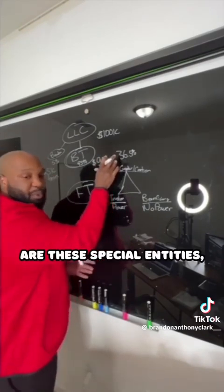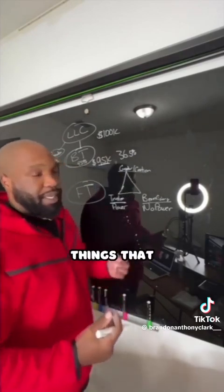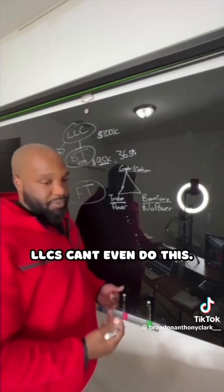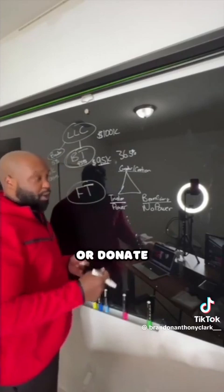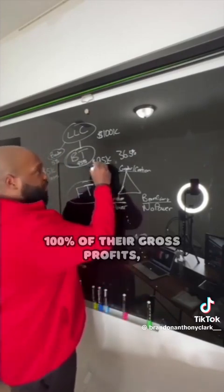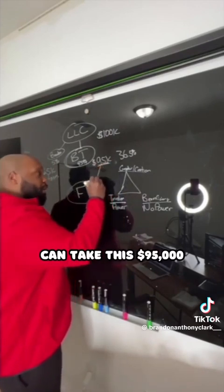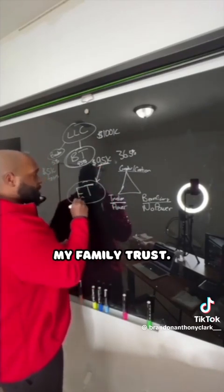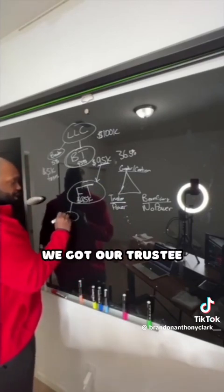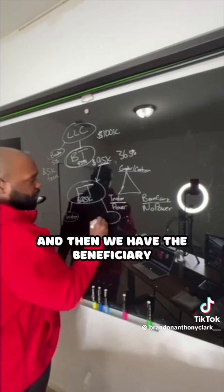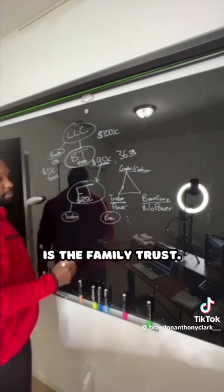But because trusts are these special entities, they can do something that we as people can't do — things that S-Corps can't do, C-Corps can't do, LLCs can't even do. Trusts have the unique ability to transfer or donate 100% of their gross profits, gross revenue. So I essentially could take this $95,000 and donate it to my family trust. The beneficiary of my business trust is the family trust.